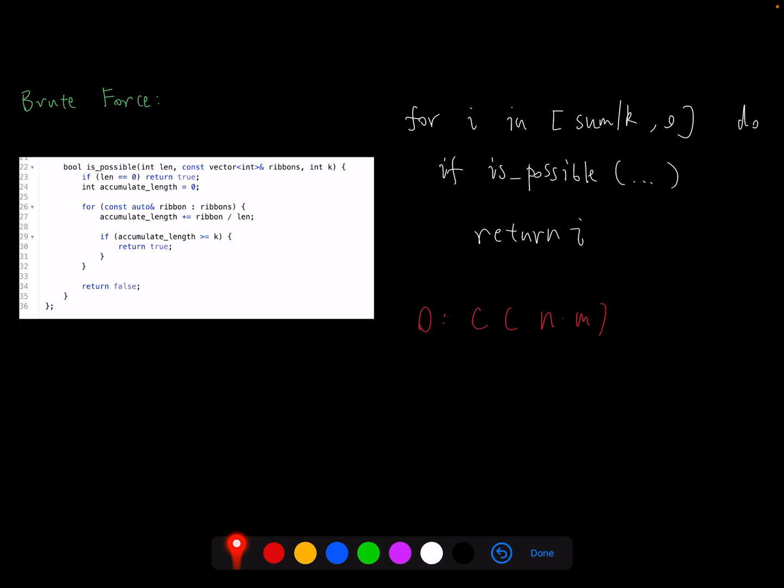Then by looking at the computation complexity, first we have a for loop here. For example, we are assuming sum divided by k is n. Then we have a nested for loop here, assuming the ribbon length is n. So eventually we will have n multiplied by n as computation complexity.